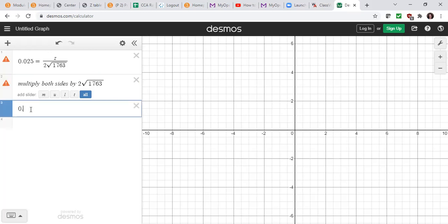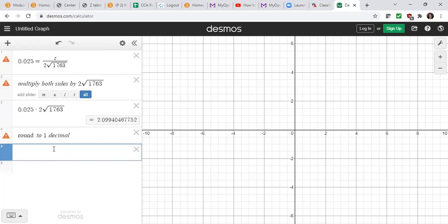So then we're left with 0.025 times that, and that's going to be equal to our z. We're going to round to one decimal. So that gives us that our z alpha over 2 is equal to 2.1.